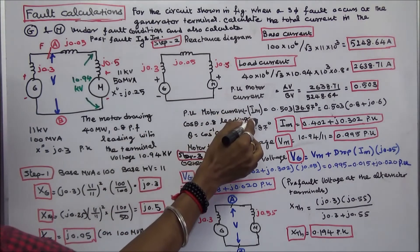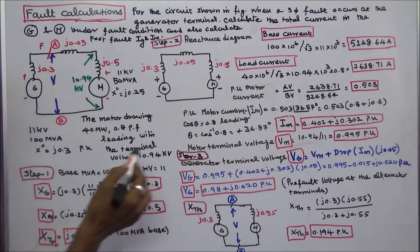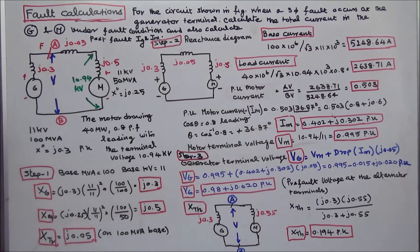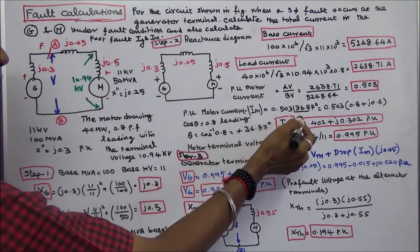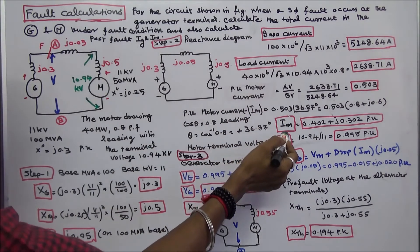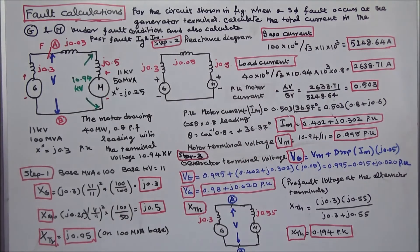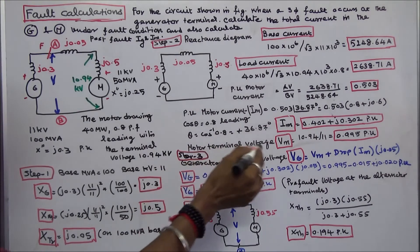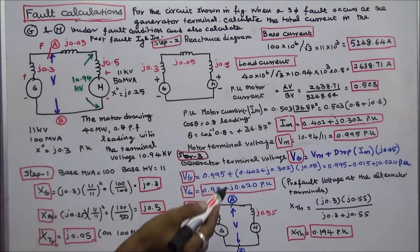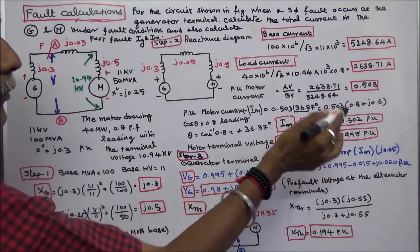Per-unit motor current IM is equal to 0.503. Since power factor is leading, cos θ = 0.8, θ = cos⁻¹(0.8) = 36.87 degrees. So IM = 0.503 ∠36.87° in polar form. Converting to rectangular form: motor current in per unit = 0.402 + J.302 per unit. Per-unit motor terminal voltage = actual/base = 10.94/11 = 0.995 per unit.